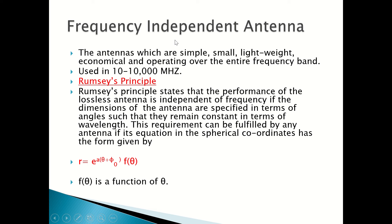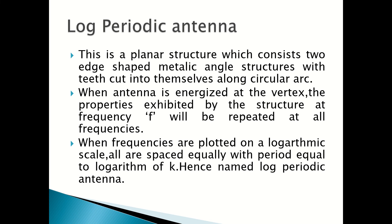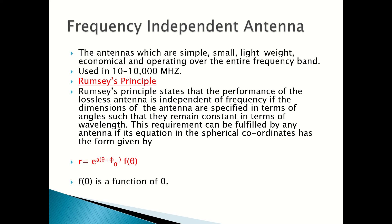Frequency independent antennas - from the name itself you can make out they are independent of frequency. These are simple, small, lightweight, and economical, operating over the entire frequency band. They are not designed for a particular frequency but for the entire frequency band, and are used in the range of 10 to 10,000 megahertz.